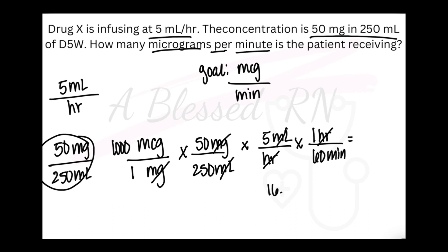You multiply across the top, multiply across the bottom, and solve. We get 16.6 repeating, and we can round that to 16.7 micrograms per minute. Always make sure that you label your final answer so you won't get it wrong.